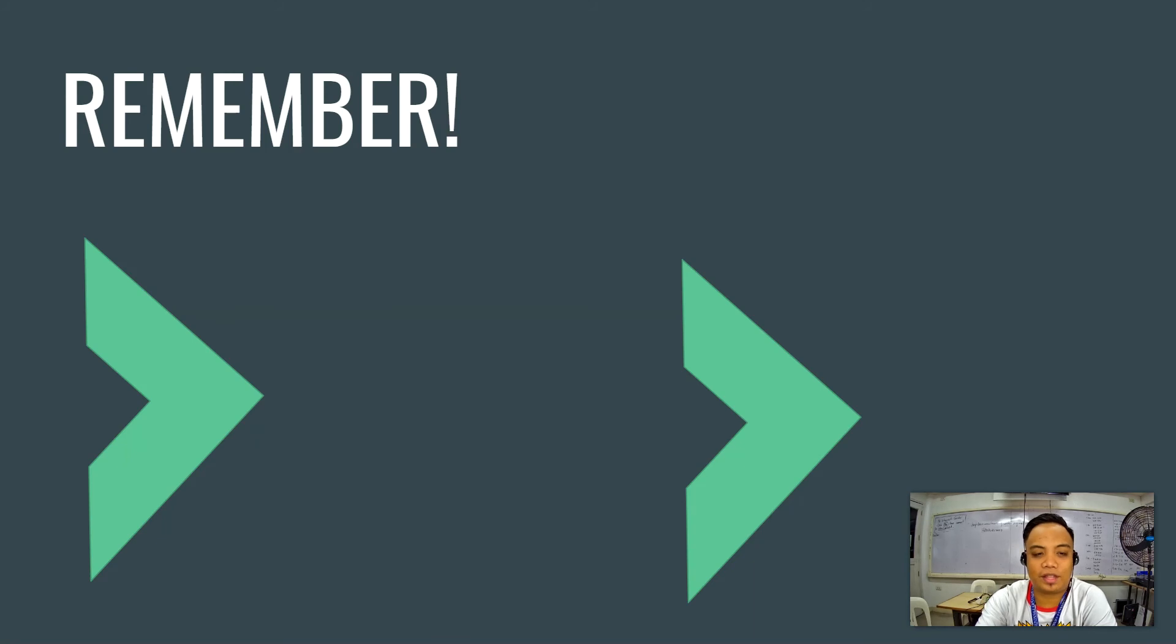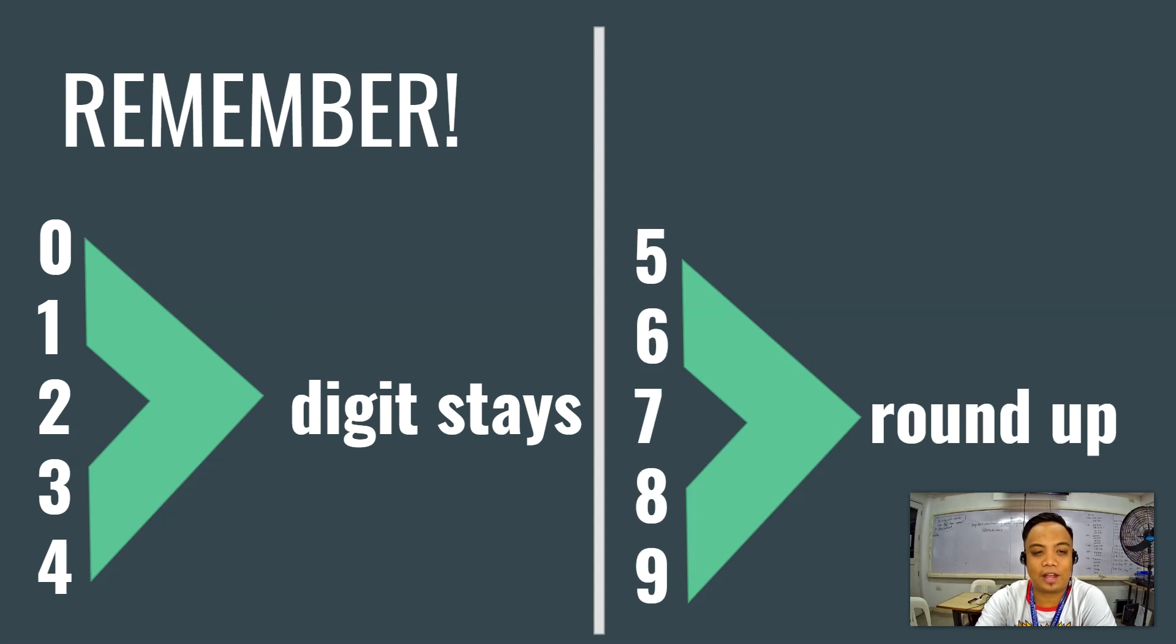But first, I want you to remember this thing. Whenever we round off numbers, we locate a certain digit in a certain place value. When the preceded number is 0 to 4, the digit will stay. When the preceded number is 5 to 9, the digit will round up.